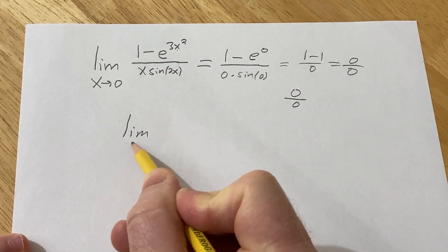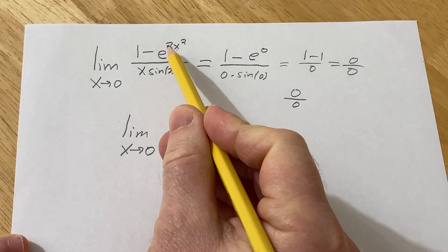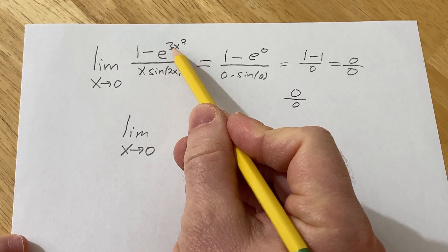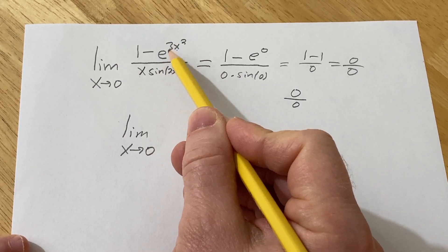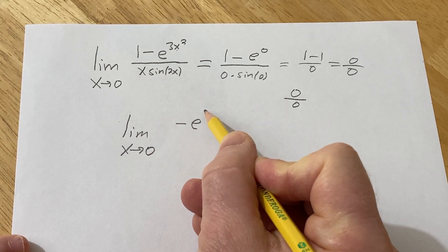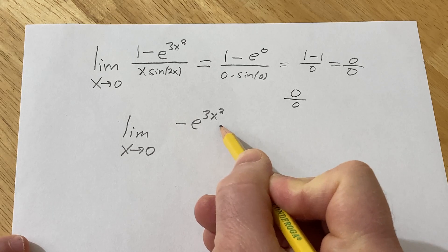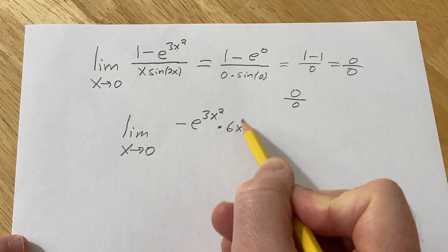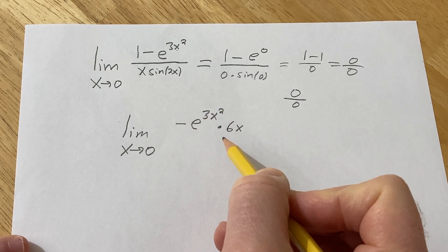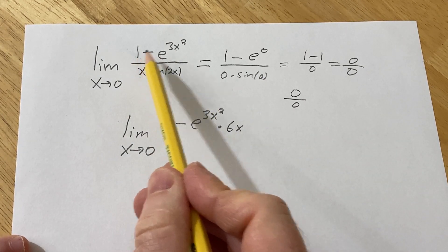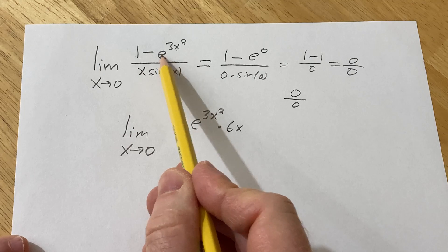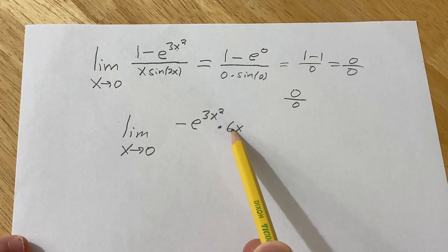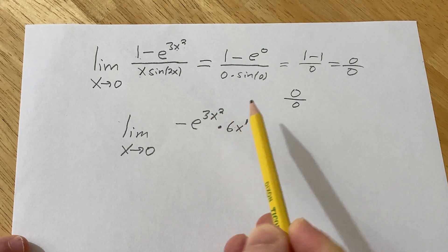So this is the limit as x approaches 0. We're going to take the derivative of the numerator. The derivative of 1 is 0, and for the e to the 3x squared term we use the chain rule. The derivative of e to the x is e to the x, so this will be e to the 3x squared times the derivative of the inside, which is 6x via the power rule — you multiply 2 and 3 to get 6 and subtract 1 from the exponent.